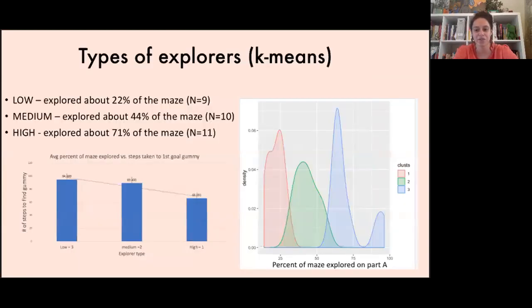We break down their percentage of maze explored into one of three groups: low, medium, and high explorers. And what we find is that the less exploring the child did in the first part of the maze, the higher the number of steps it took them to reach the gummy. The y-axis represents the number of steps it took them to find the gummy and the x-axis represents the explorer type. The data suggests a trend that higher explorers are more efficient at finding a goal in this maze setting.